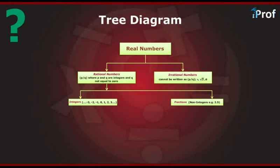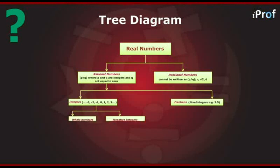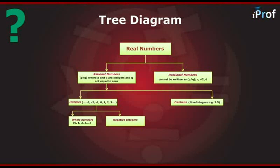Integers are further divided into two categories: whole numbers and negative integers. Whole numbers include numbers like 0, 1, 2, 3 and so on and so forth. Negative integers are integers with a negative sign, like minus 3, minus 2, minus 1.